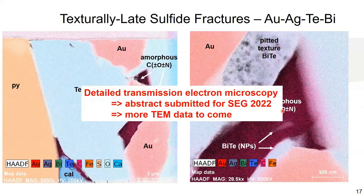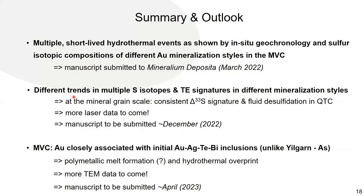This TEM work has been submitted as an abstract to SEG, and there is more TEM data to come. We hope we're making a compelling argument for multiple short-lived hydrothermal assembly events responsible for the formation of orogenic gold at the camp scale. That manuscript has already been submitted to Mineralium Deposita. We still need to investigate our multiple sulfur and trace element datasets in more detail, but we can already make some first preliminary interpretations with respect to the quartz-tourmaline-carbonate vein set. There is still more laser data to come, and we are hopeful to submit a manuscript later this year.